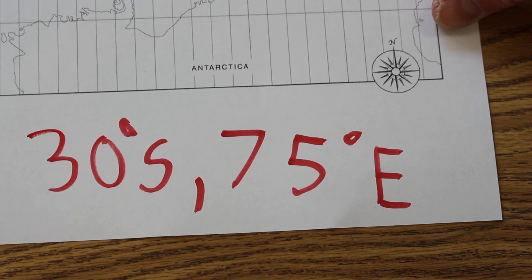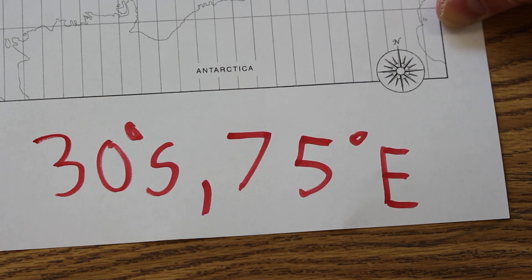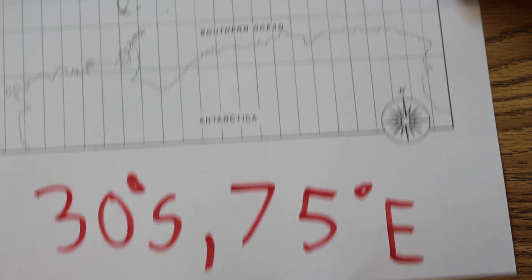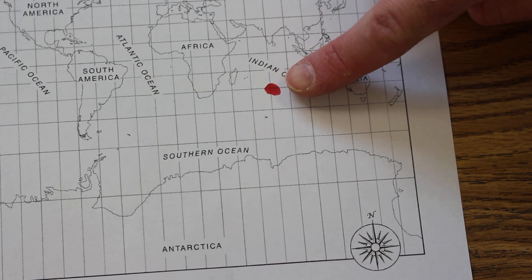So it's 30 degrees south of the equator and 75 degrees east of the prime meridian. And it's in the Indian Ocean.